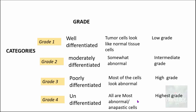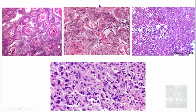Grade 1 is the lowest grade and Grade 4 is the highest grade of tumor. As an example, this is a well-differentiated squamous cell carcinoma — you can make out that it resembles normal squamous cells in that it shows evidence of keratinization. These are squamous pearls, and this is what you see in well-differentiated squamous cell carcinoma.